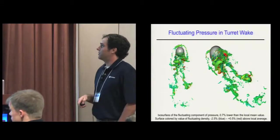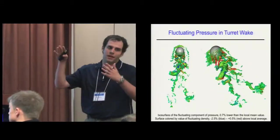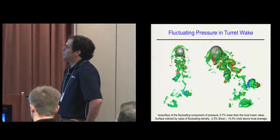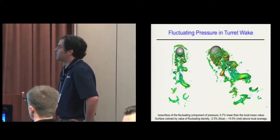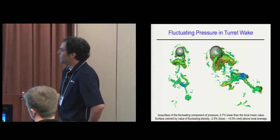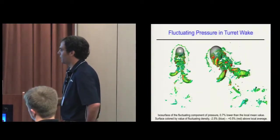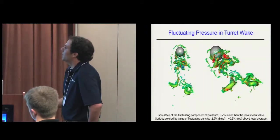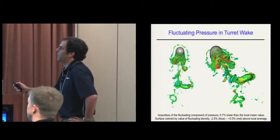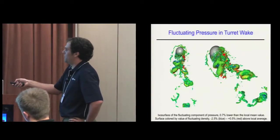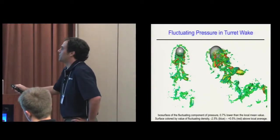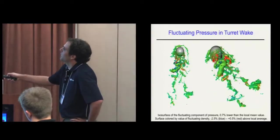This is the fluctuating pressure, where I take temporal fields and remove the time mean. This gives you the time-varying structures in the wake. These identify vortex cores - a little bit lower pressure than the mean. I colored it using the fluctuating density, which is done in the same way by removing the time mean. That density is what's responsible for the aero-optics aberrations.